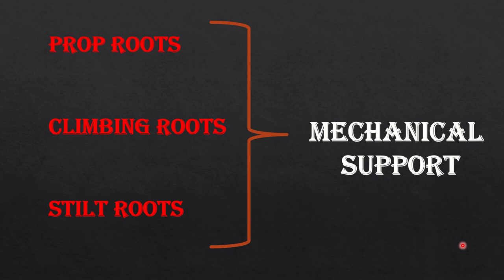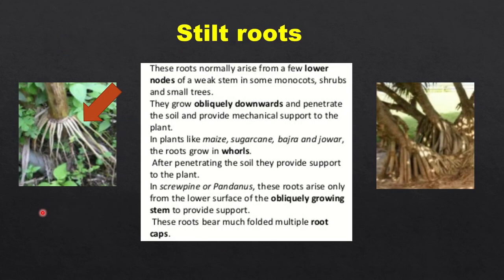Now moving to mechanical support. Here we will learn about prop roots, climbing roots, and stilt roots. Stilt roots arise from a few lower nodes of a weak stem in some monocots, shrubs, and small trees — weak stems need support. They grow obliquely downwards and penetrate the soil to provide support so that the plant doesn't fall.